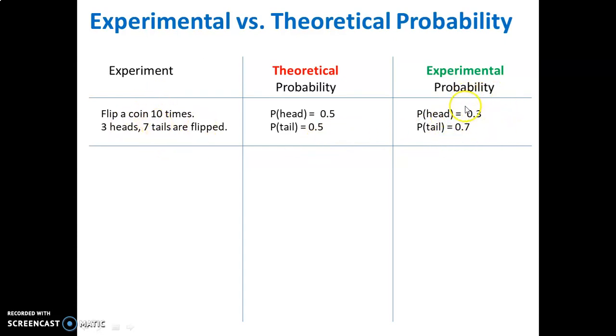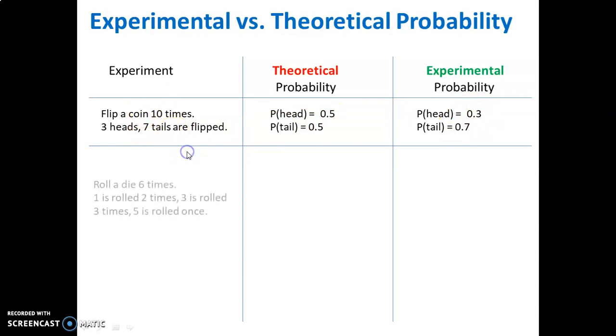Notice our experimental probability does not match our theoretical. That is often the case, particularly if we run a small experiment with a small number of trials. To get our experimental probability closer to theoretical, we should run more trials.